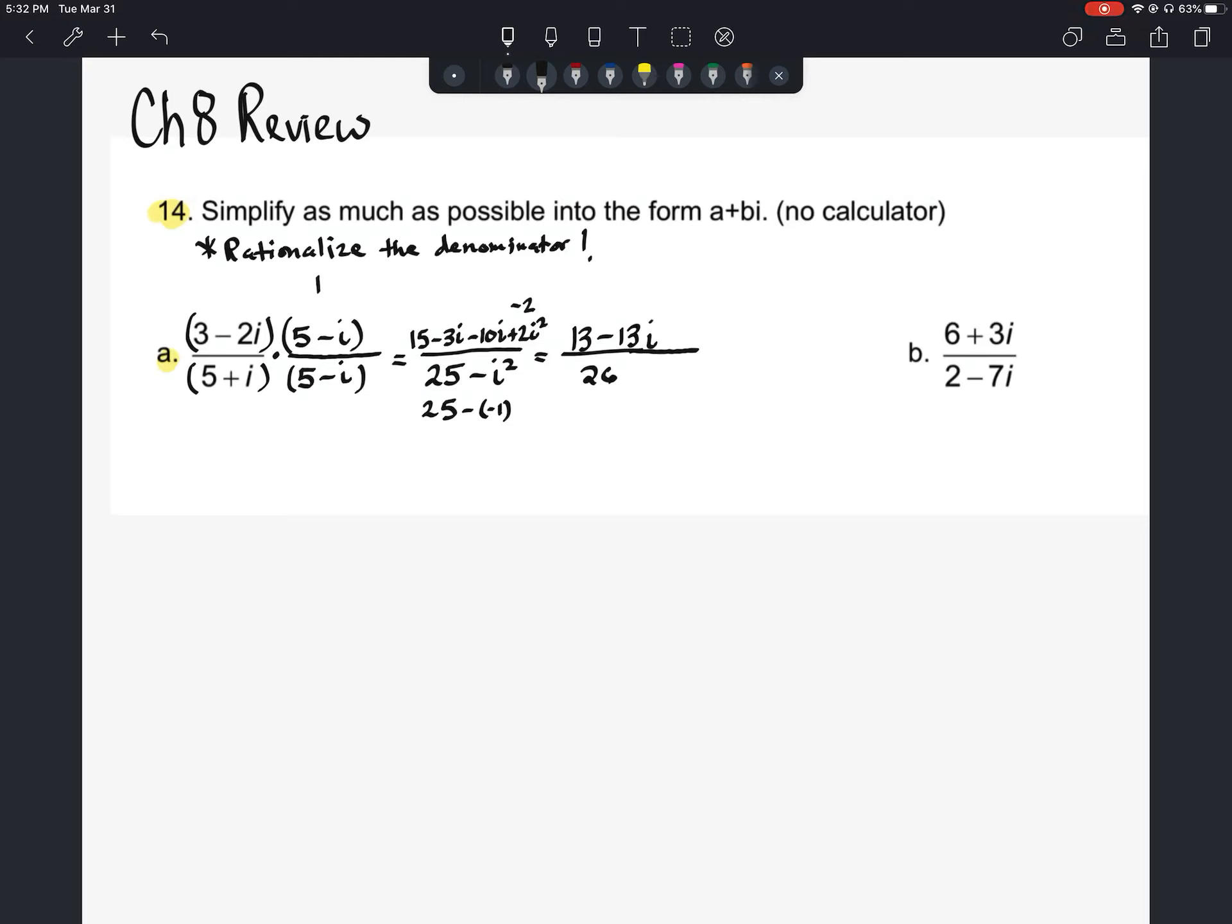So we want to simplify it to the form a plus bi. What we're going to need to do then is break this and give them each their own denominator. So I'm going to have 13 divided by 26 minus 13 over 26i. And each of these here does reduce, so this would end up being 1 half minus 1 half i. And that would be our answer.